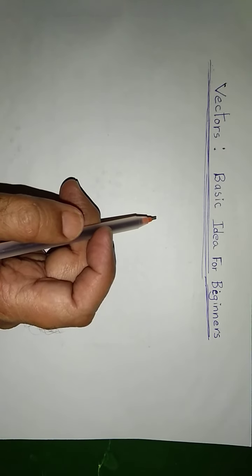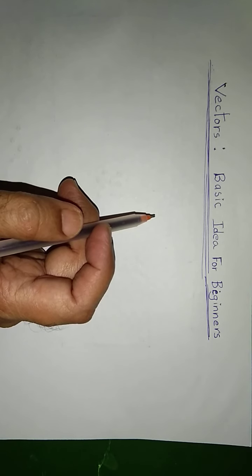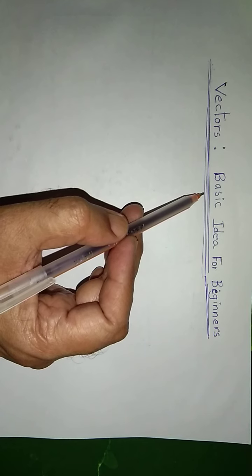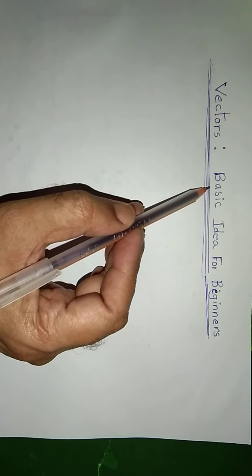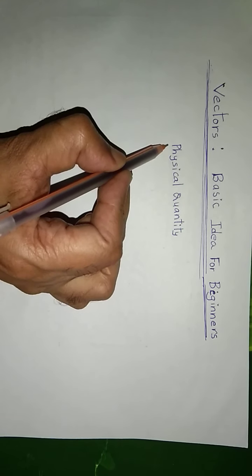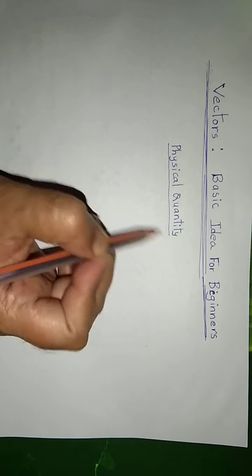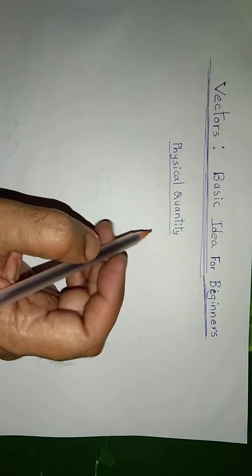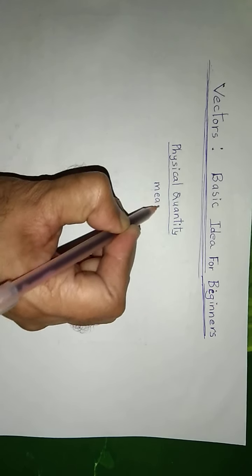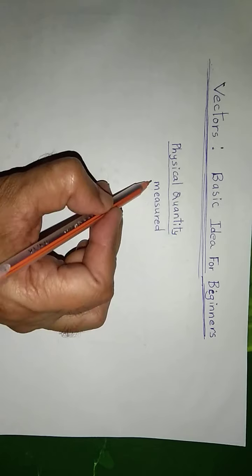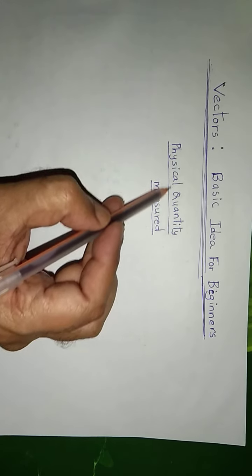Hello students. In this lecture on vectors, this lecture is only meant for a basic idea for beginners. What do you mean by physical quantity? Physical quantity is anything that can be measured. Please remember, anything that can be measured is considered as a physical quantity.